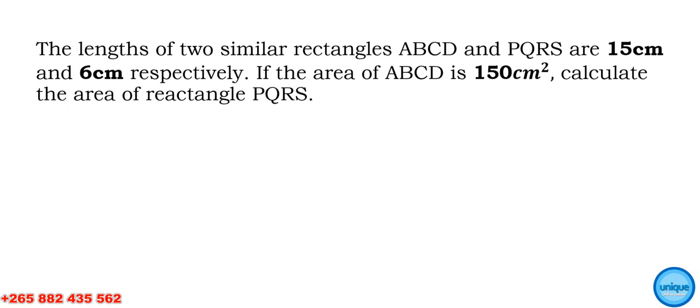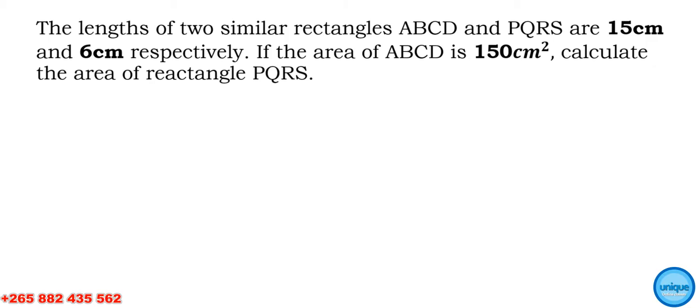The question can look like this: The length of two similar rectangles ABCD and PQRS are 15 centimeters and 6 centimeters respectively. We're given that the area of the bigger rectangle is 150 cm². We need to find the area of the smaller rectangle.